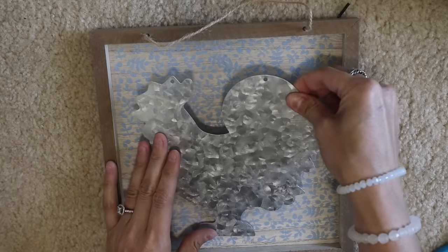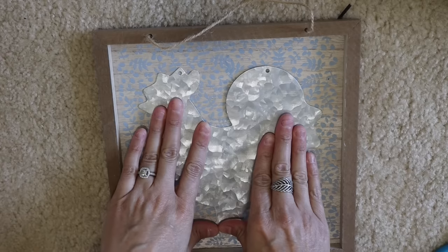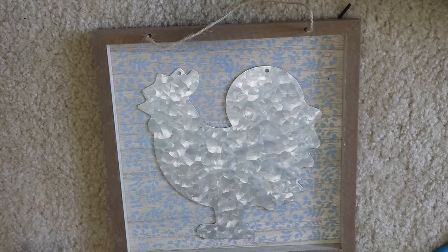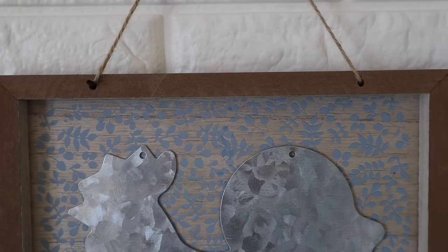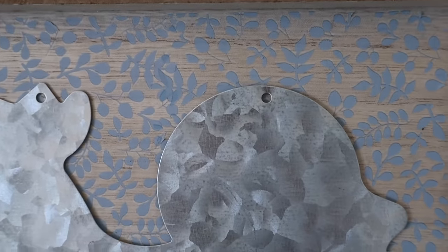And then for the center of this, I'm just going to be adding this chicken in here. This is also from Dollar Tree. It's just one of their galvanized pieces. Kind of wish I would have painted it. Kind of blends in a little bit, but either way, I think this one turned out super cute.